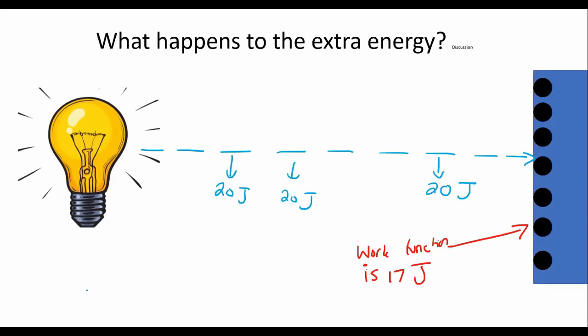Because the work function tells us that you need 17 joules of energy to remove an electron. However, every single one of these photons has enough energy. They have 20 joules of energy. So what is going to happen to the extra energy?